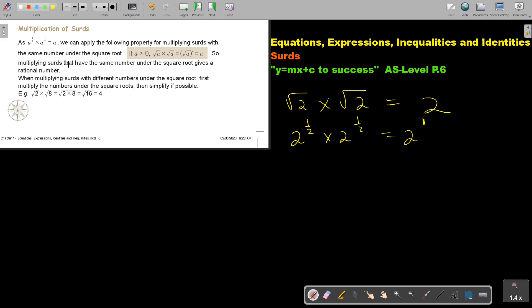Multiplying surds that have the same number under the square root gives a rational number. When multiplying surds with different numbers under the square root, first multiply the numbers under the square roots then simplify if possible. So this is almost like the reverse. I will make it one, I multiply and then I simplify.